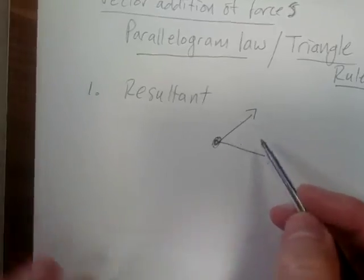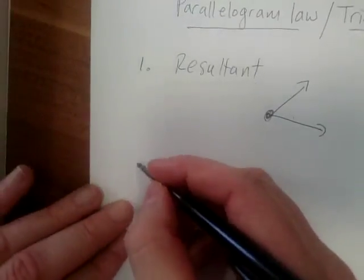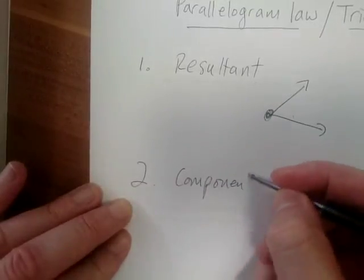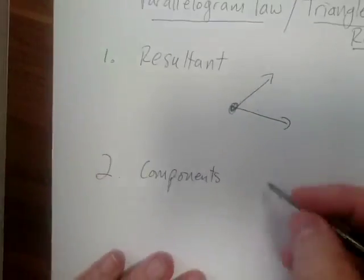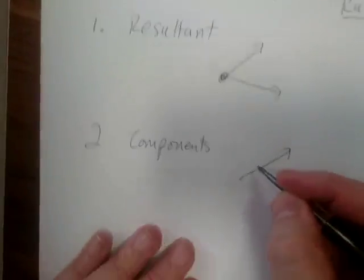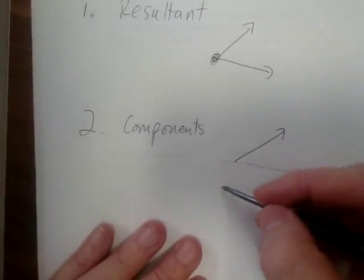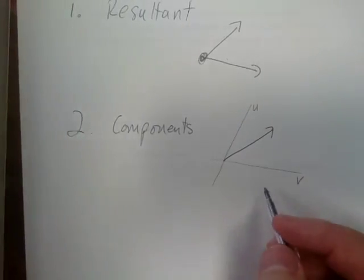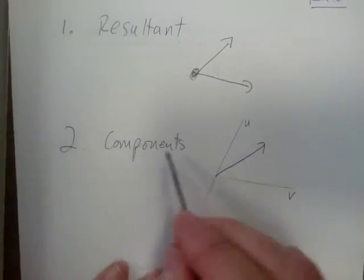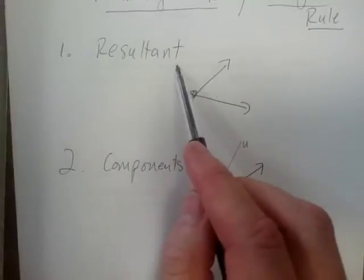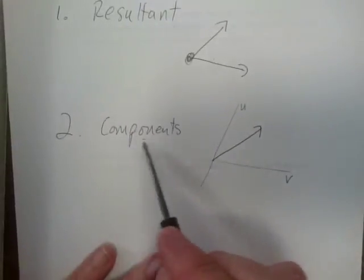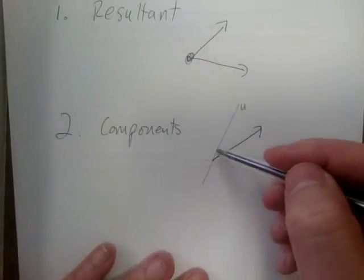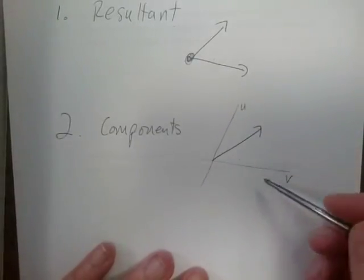The second thing that we generally always want to do is we would want to find the components of a single force along two arbitrary axes. So either we want to find a resultant, or we have a resultant but we want to find its components along two arbitrary axes.